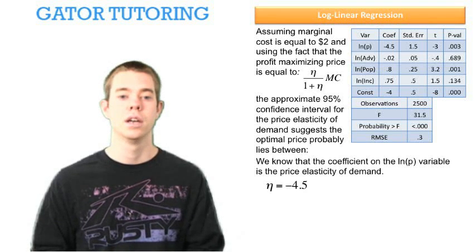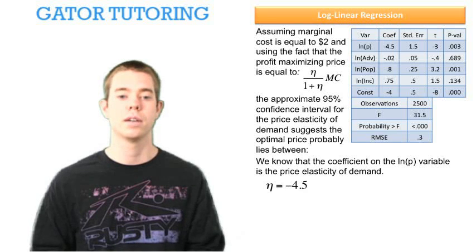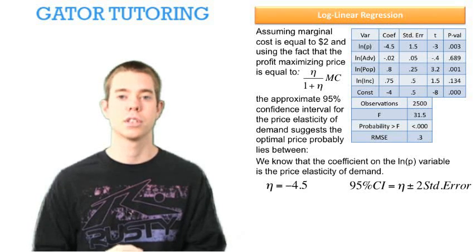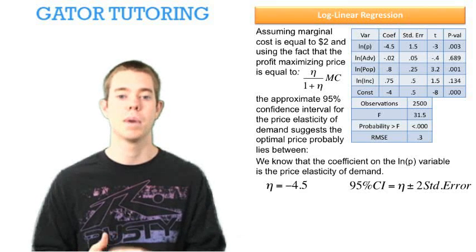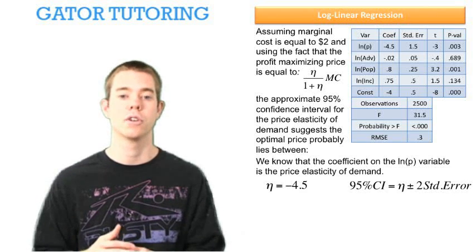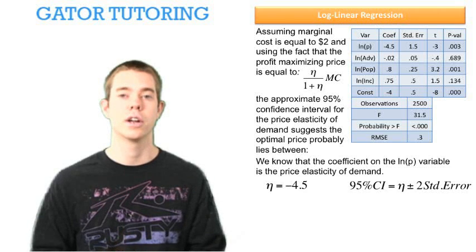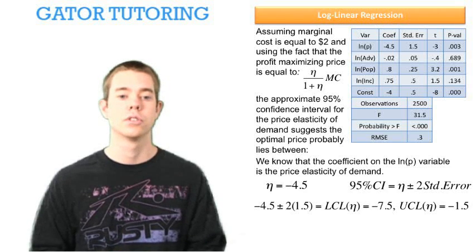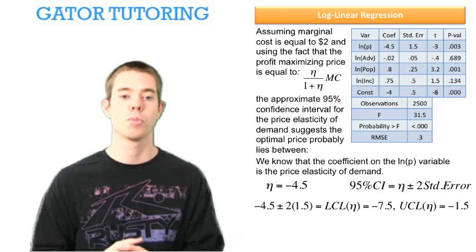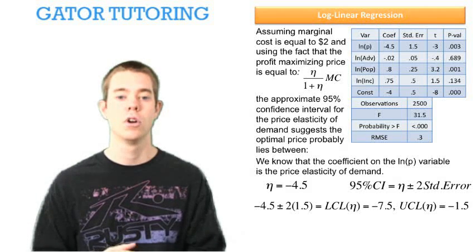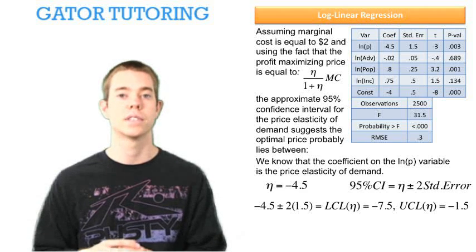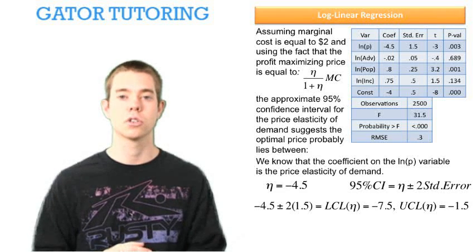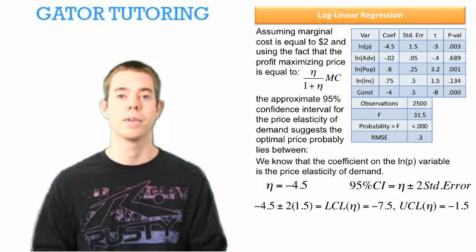The elasticity is negative 4.5. We know that the 95% confidence interval is going to be the elasticity plus and minus two times that variable's standard error, which in this case is 1.5. So when we do negative 4.5 plus and minus two times 1.5, we find that our lower control limit of the elasticity of demand is negative 7.5 and our upper control limit of the elasticity of demand is negative 1.5.